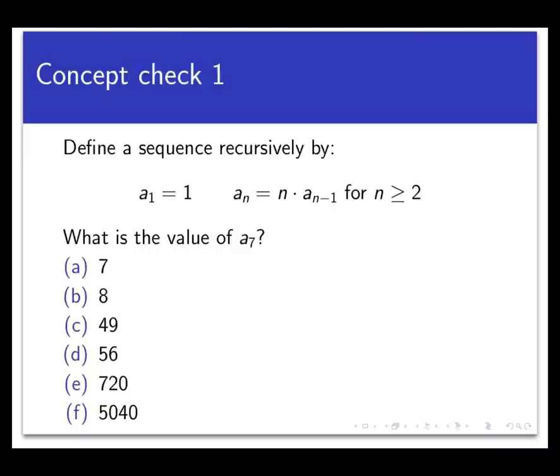So let's see how well you're understanding recursively defined sequences with a quick concept check. Let's suppose that we're going to define a sequence recursively by declaring a_1 to be equal to 1. And then a_n, every other nth term, as long as for n bigger than or equal to 2, every other term in the sequence is defined by n times a_(n-1). So with that, what is the value of a_7? Work this out and pause the video while you're doing it and then come back when you have a result.